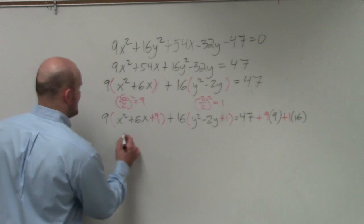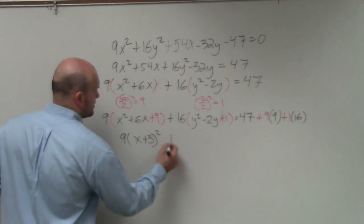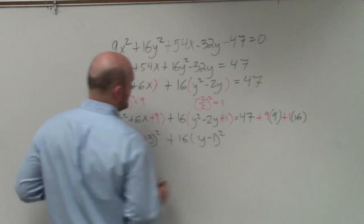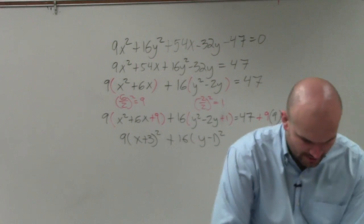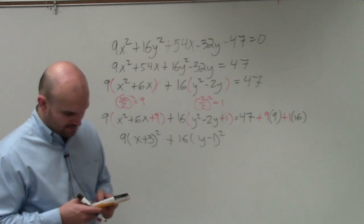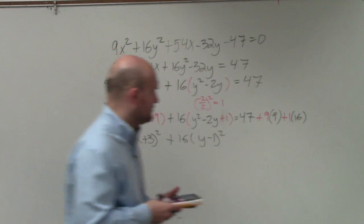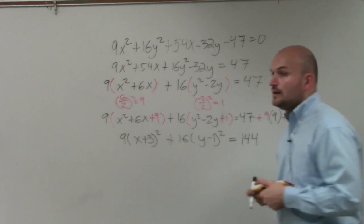So now we go ahead and factor this out. So 9 times x plus 3 squared plus 16 times y minus 1 squared. Anybody work that one out? 47 plus 81 plus 16, 144.